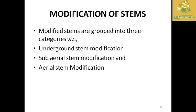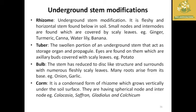Stem modifications are grouped into three types: underground, sub-aerial, and aerial. Underground stem modifications include: rhizome — a fleshy horizontal stem found below ground with small internodes and scaly leaves; examples: ginger, turmeric, and canna.